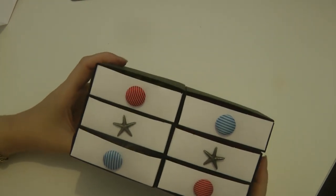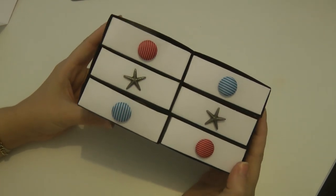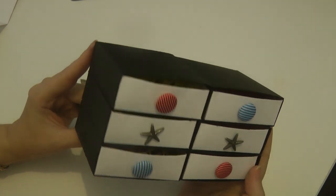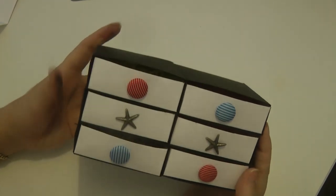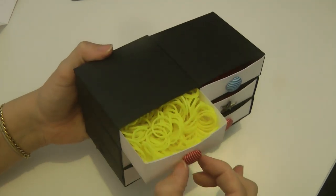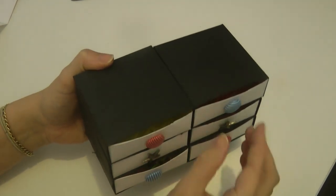Hello, Jen here from Origami Twist. It's Tuesday which means it's tutorial time. This is a viewer requested project for a chest of drawers that is the perfect shape and size for your rainbow loom elastics.